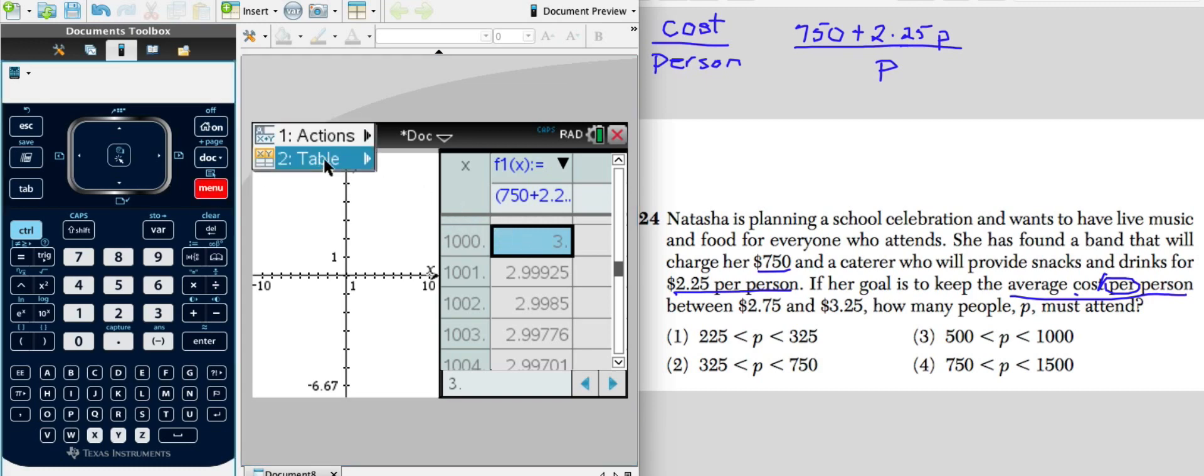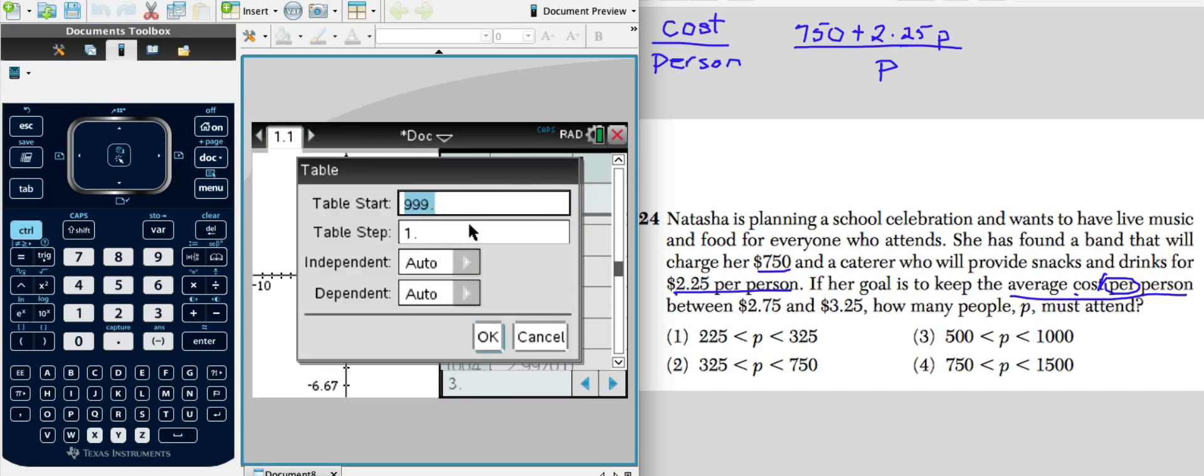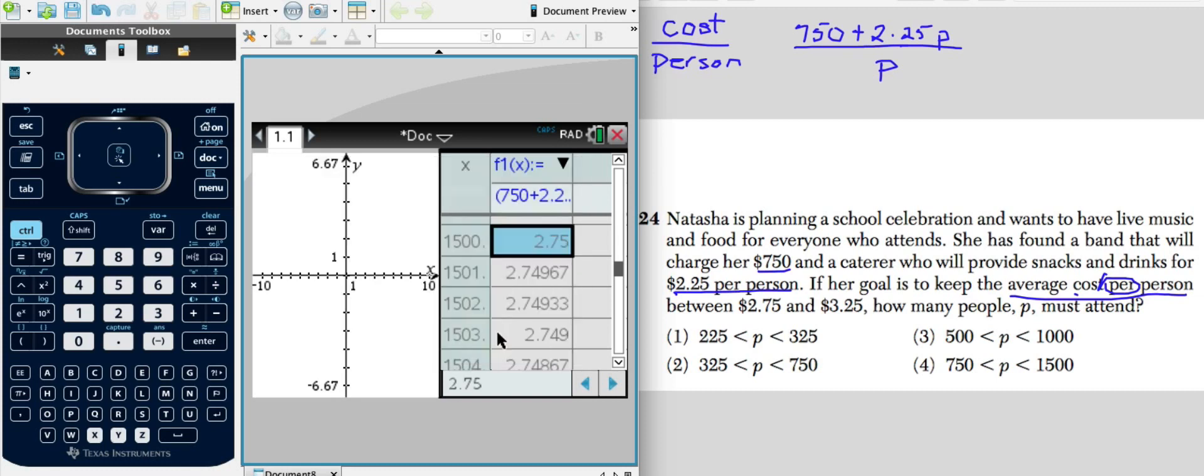So again, we will go to menu, table, table settings, and I'm going to go to 1499. That's going to get me right in there. Click OK. And there we have it, the $2.75. The answer is 750 is greater than or equal to P, which is less than or equal to 1,500.